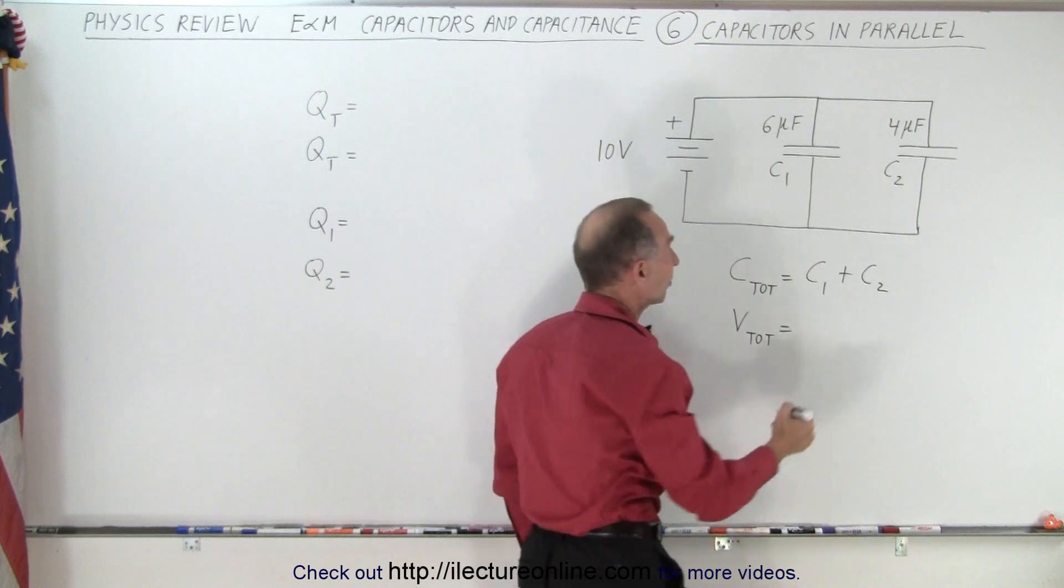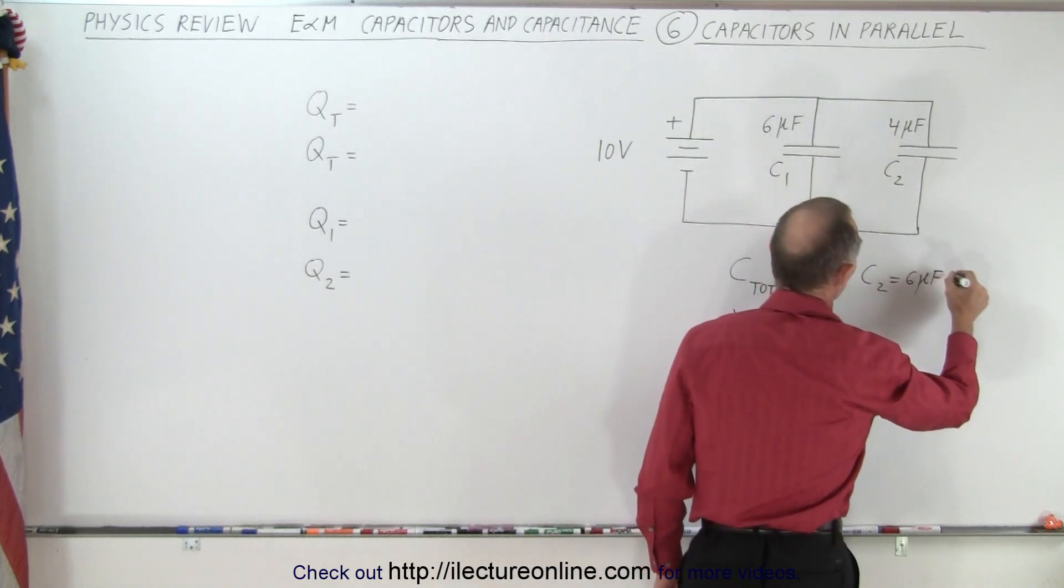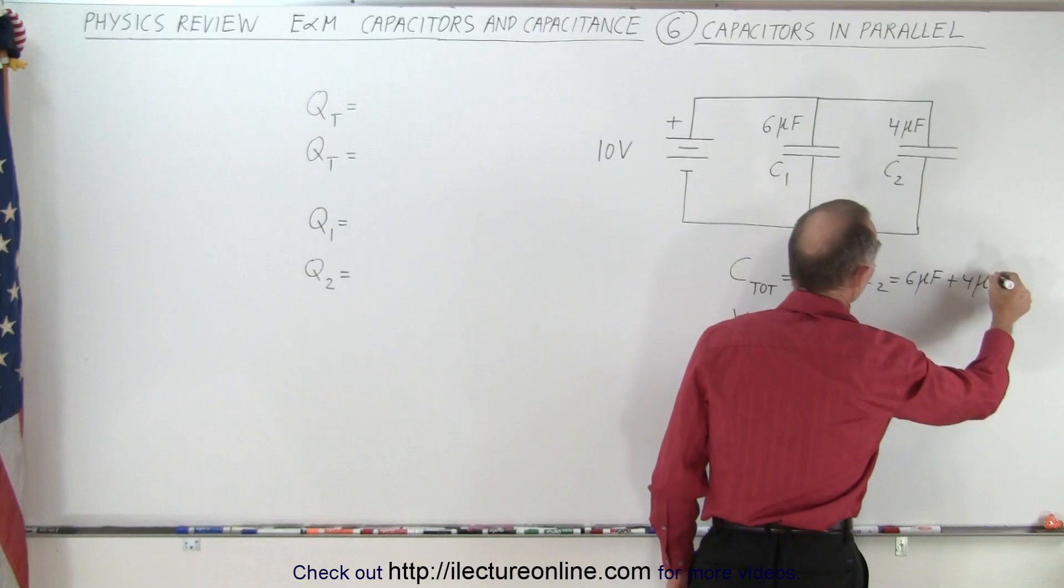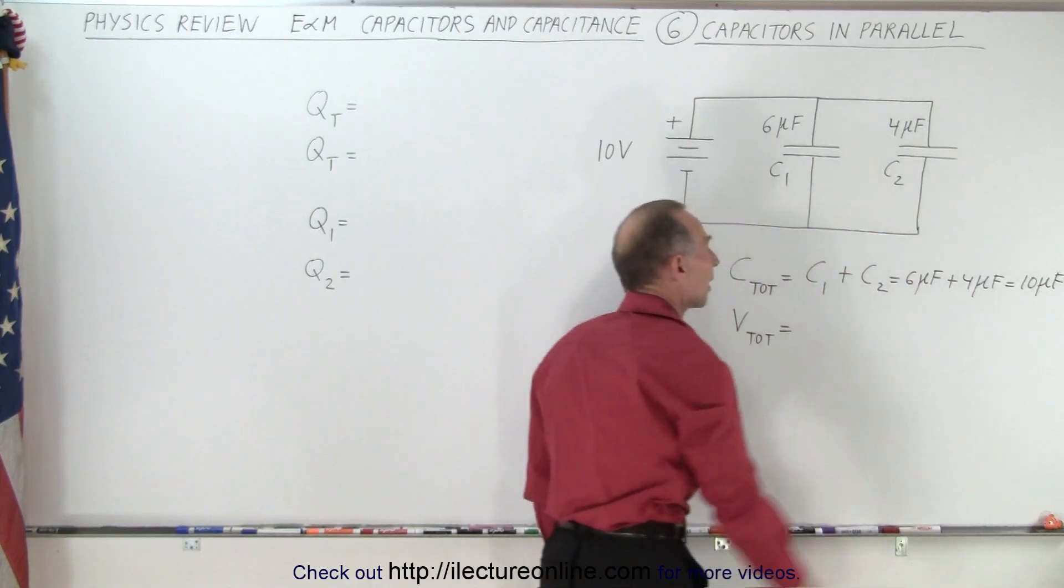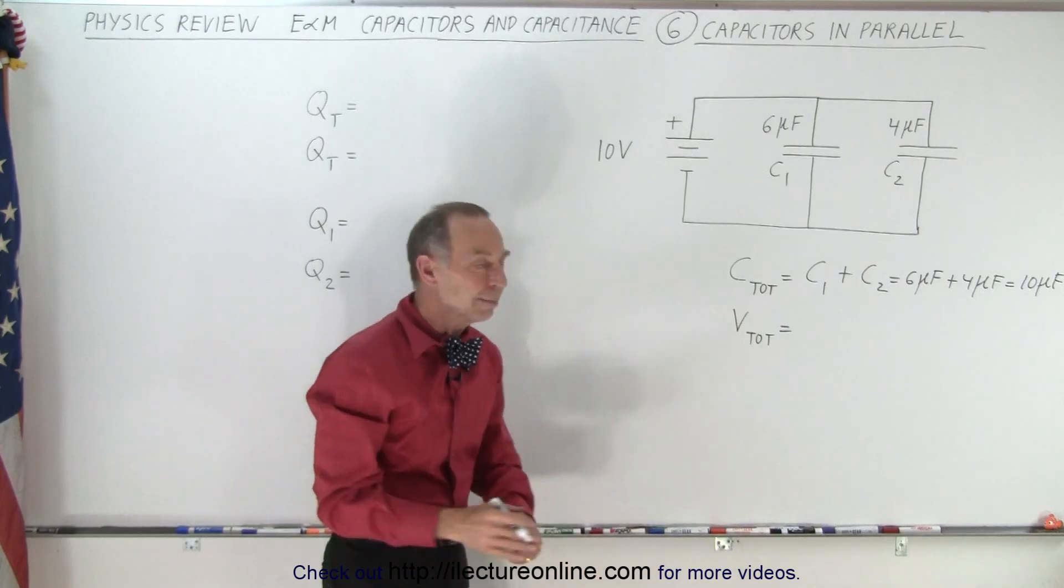That's simple enough. So in this case, that would be 6 microfarads plus 4 microfarads, which is 10 microfarads. That would be the total capacitance of the two capacitors in parallel.